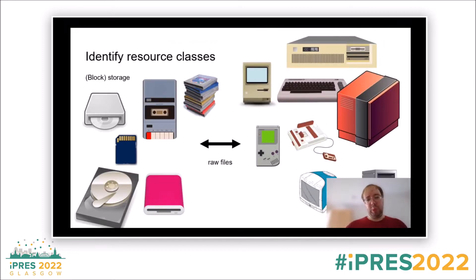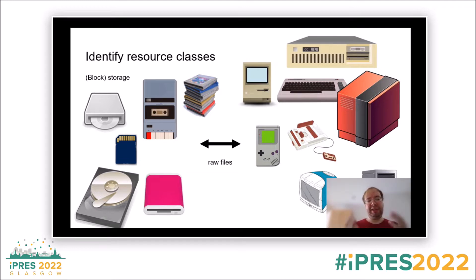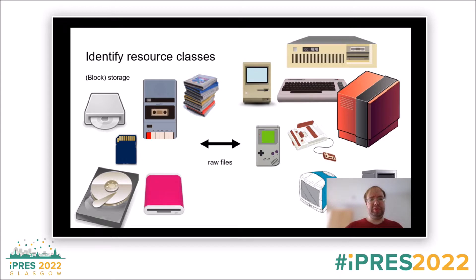To do this, we have to identify common resource classes which are used by all emulators and which interface with the outside world. The first resource class we have identified is block storage — or more generally, storage — which comes in a diverse number of physical appearances. It might be an optical drive, a hard disk drive, a floppy drive, SD cards, some cartridges, or even a cassette player.